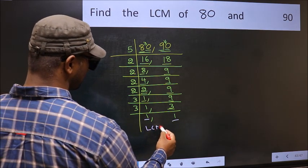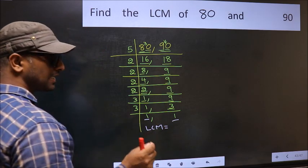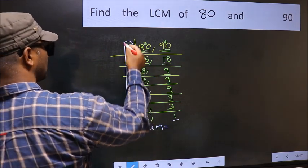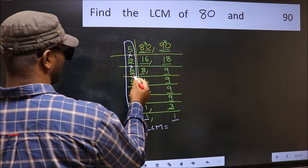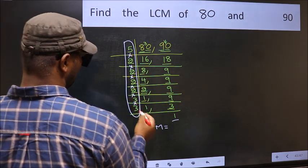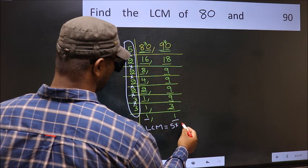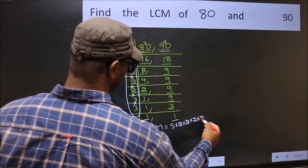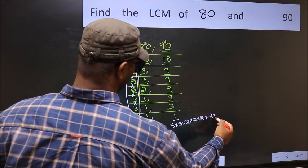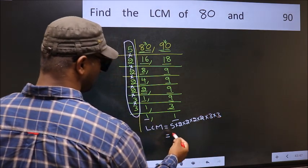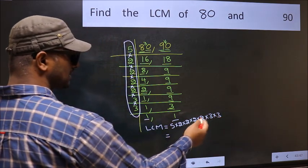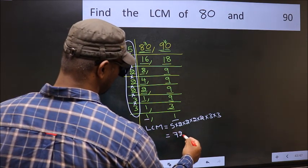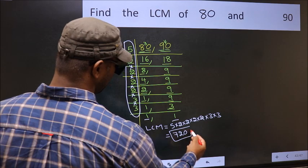So our LCM is the product of all these numbers. That is 5 times 2 times 2 times 2 times 2 times 2 times 2 times 3 times 3. When we multiply these numbers we get 720, which is our LCM.